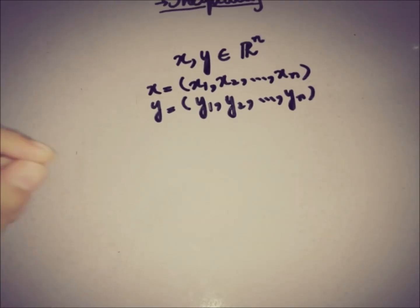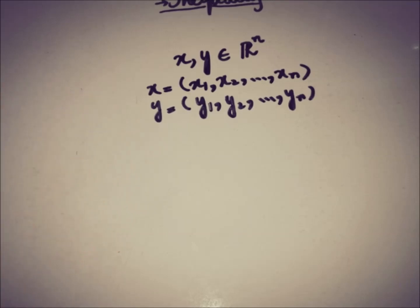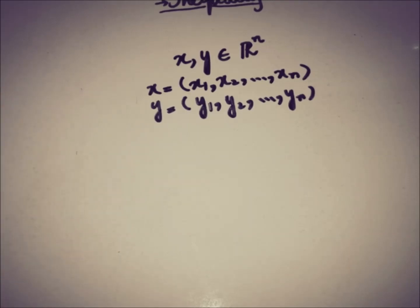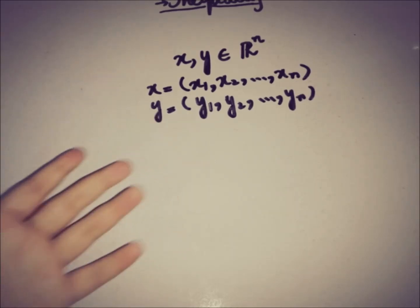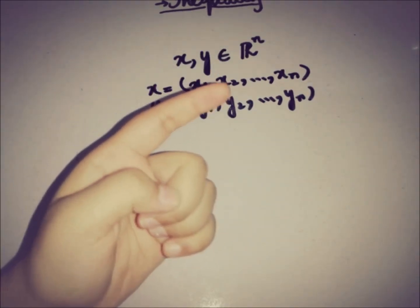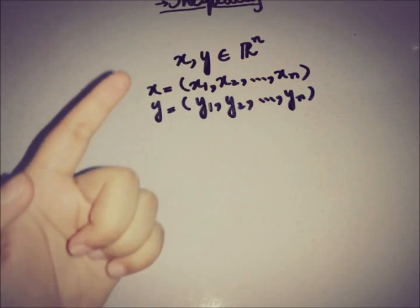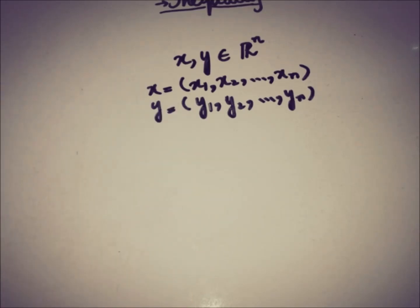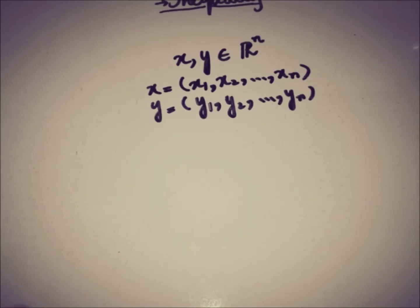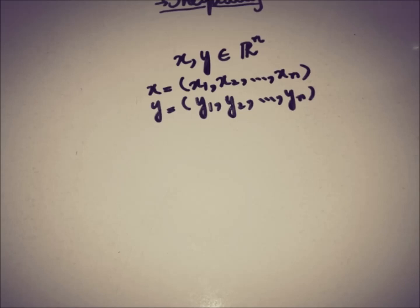We suppose that x and y are two non-zero elements taken from ℝⁿ. If x and y were the zero elements of ℝⁿ — meaning every component x1, x2, ..., xn and y1, y2, ..., yn equals zero — then the inequality is trivially true and needs no proof. We prove this for the case when x and y are non-zero elements of ℝⁿ.